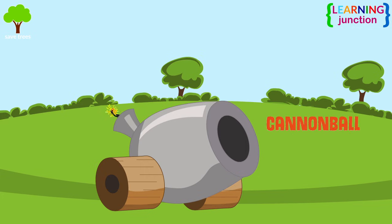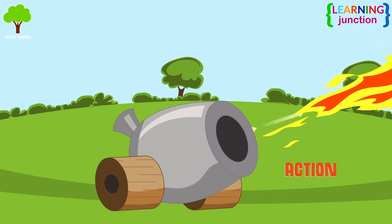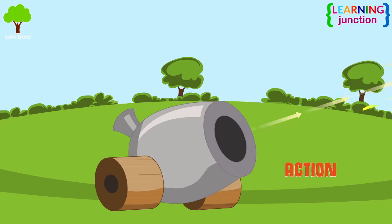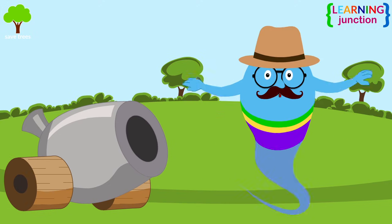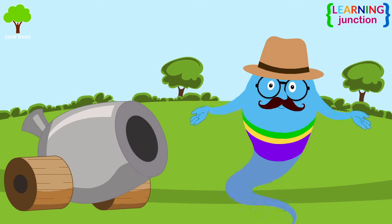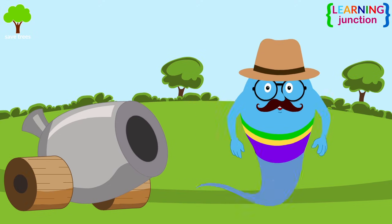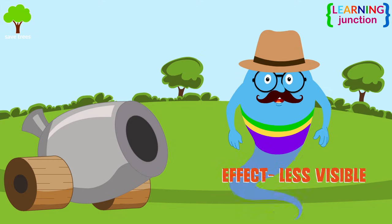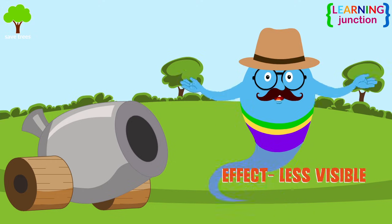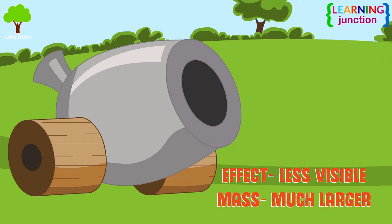See this cannon ball? When it is fired through the air by explosion, the cannon is pushed backward. The force pushing the ball out is equal to the force pushing the cannon back. But the effect on the cannon is less visible because its mass is much larger.